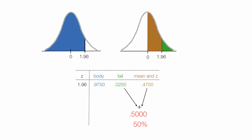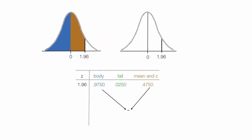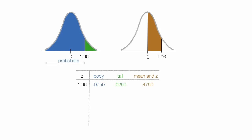Finally, if I take the body, 0.9750, and subtract 0.4750, what's left is 0.500, or 50% — that red area right there would be left over. So all three values — the body, tail, and mean-to-z — all three of these areas represent probabilities.